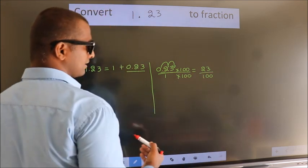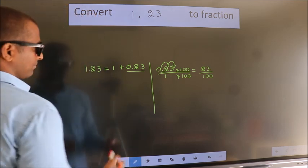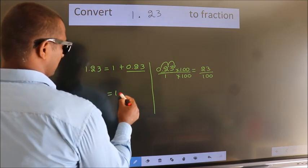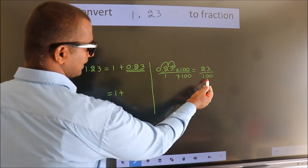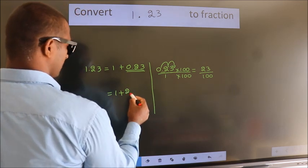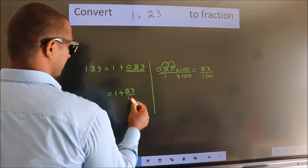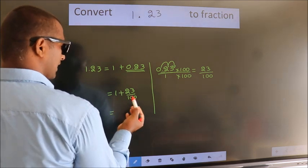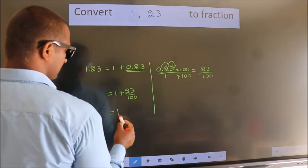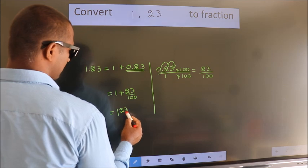So this is the fraction. Now here, 1 plus—in place of 0.23—we write 23 by 100. So 1 plus 23 by 100, in mixed fraction it is 1 and 23 by 100.